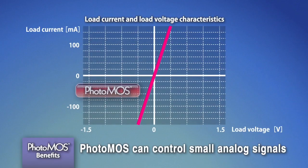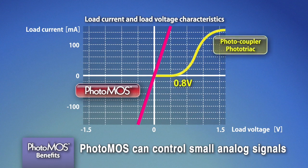A PhotoMOS can control a small analog signal. TRIACs and photocouplers or solid-state relays cannot control signals of less than a few hundred millivolts.